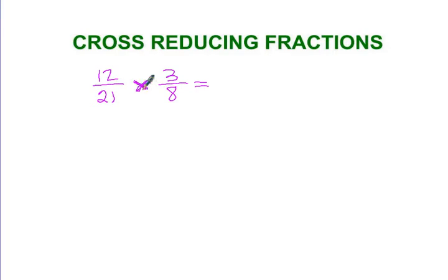This is a little x, and so you look along the lines of the x to see if you can reduce by dividing by the greatest common factor on the diagonal numbers.